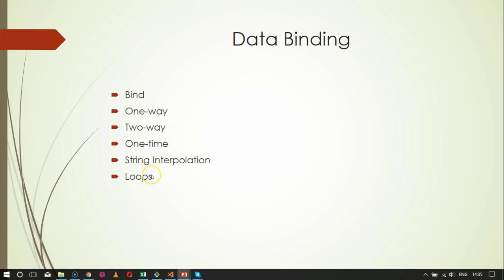After that we have string interpolation. We saw how to do one-way binding, but you will find many scenarios when you want to provide both content and binding structure. Then we have loops — binding to properties is great but it doesn't really help when you need to loop over a collection of data. For such a scenario, you need the loops solution.